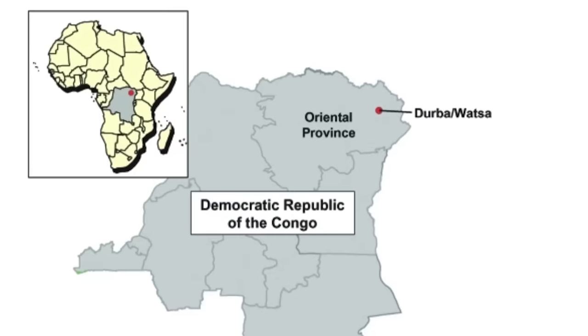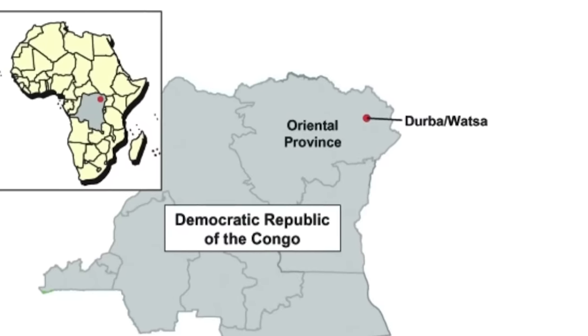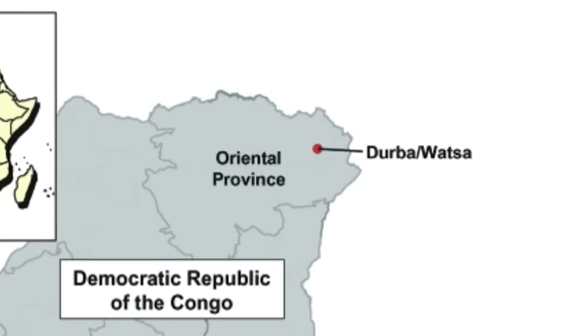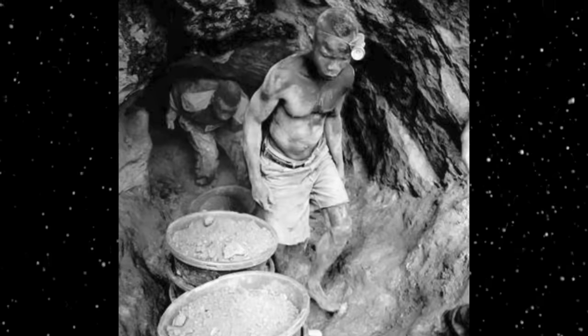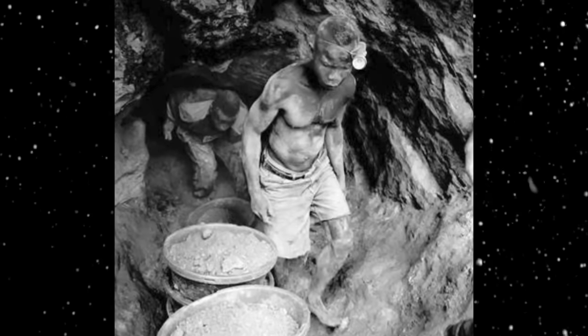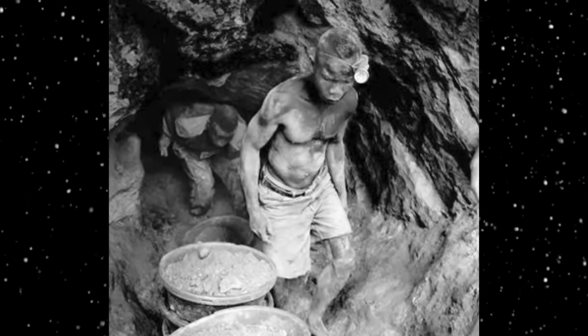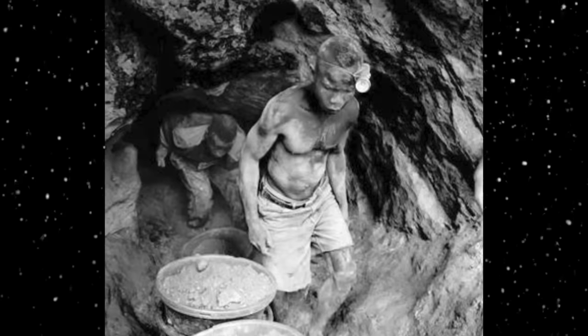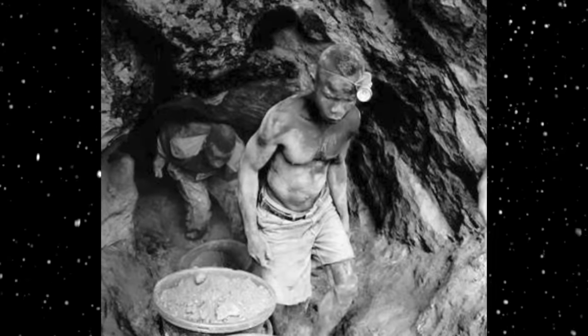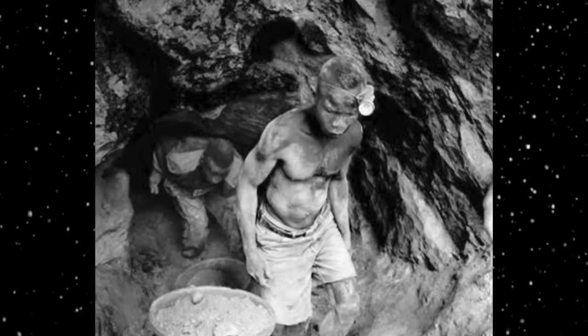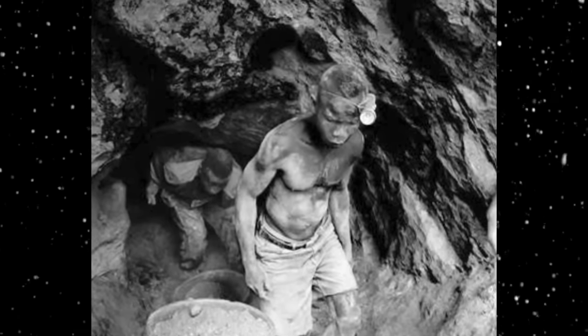In 1998, a group of gold miners in Durba, in the Democratic Republic of the Congo, were infected by bats within an abandoned mine. There were 154 cases, with 128 deaths — a mortality rate of 83%. The disease, however, appeared not to spread very far, limiting infections to a small rural area.